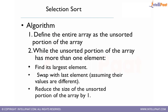The algorithm for selection sort: define the entire array as an unsorted portion. While the unsorted portion has more than one element, find its largest element, swap the largest element with the last element, and reduce the unsorted portion by one. This is a looping behavior where we find the largest element from the unsorted portion, replace it with the last element, and reduce the array by one, continuing until no elements remain in the unsorted portion.